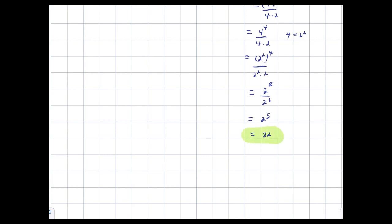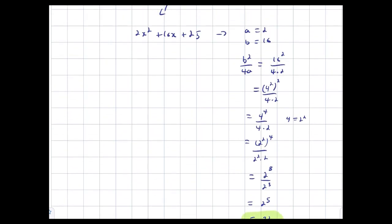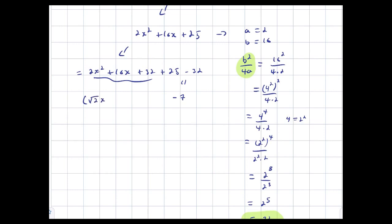And I'm not actually sure how much easier that was than just squaring 16, but you should know you can always break things down into prime factors and do the canceling. Anyway, my sneaky zero term is b²/4a = 32. So I re-express this as 2x² + 16x + 32 + 25 − 32. And 25 − 32 = −7. So this becomes (√2 · x + √32)² − 7.